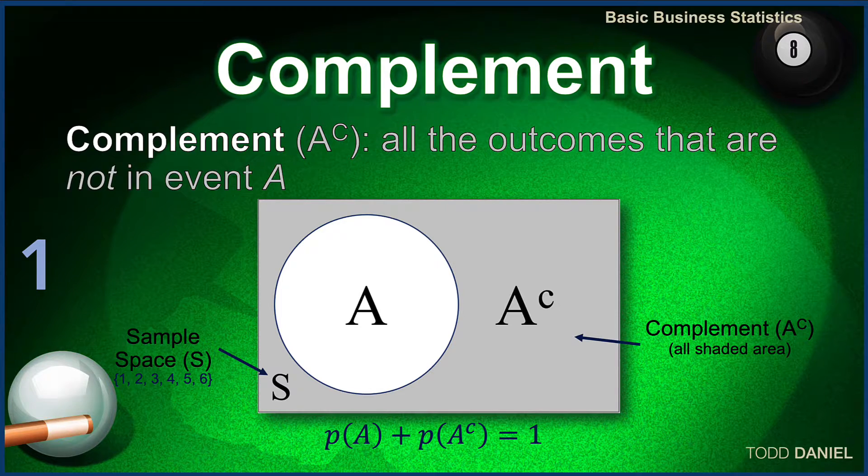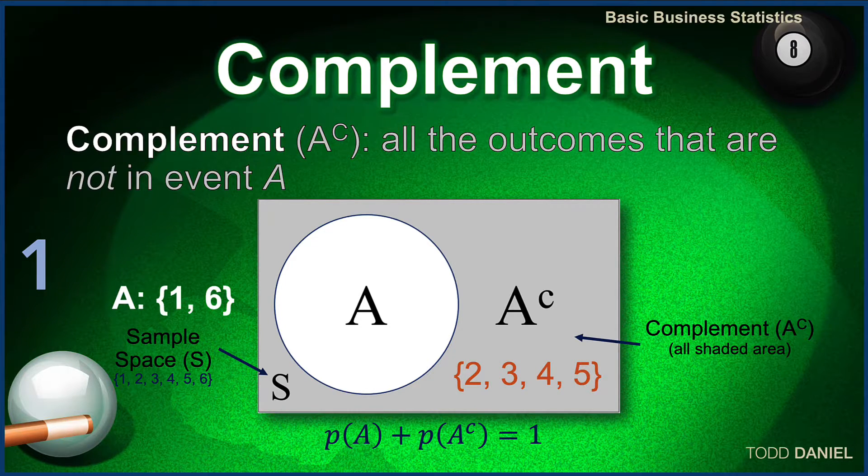Given our sample space of one die having six sides, or six possible outcomes, we want to calculate the probability of event A, which is rolling a 1 or a 6. The complement of A would be any value that is not a 1 or a 6. In this case, 2, 3, 4, and 5.